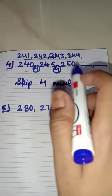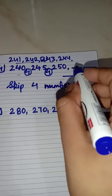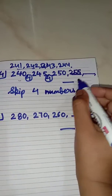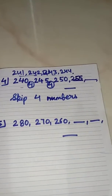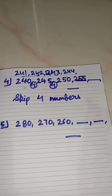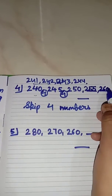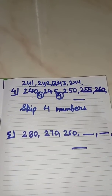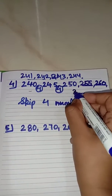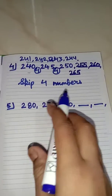So again we will follow this pattern. What comes after 250? 251, 252, 253, 254 — we skip 4 numbers and write 255. Then again skip 4 numbers: 256, 257, 258, 259 — then what comes after? 260. Then again skip 4 numbers after 260: 261, 262, 263, 264 — and write next number 265. So again we have done the same pattern — skipping by 4 numbers.